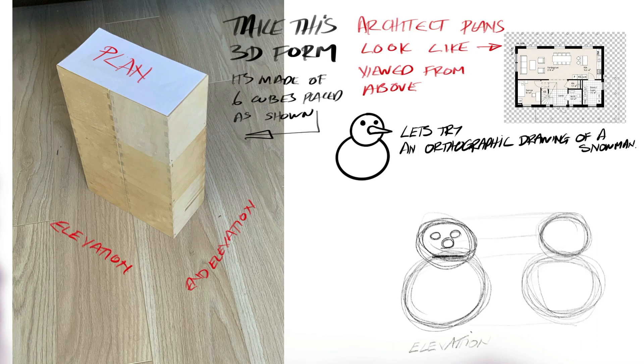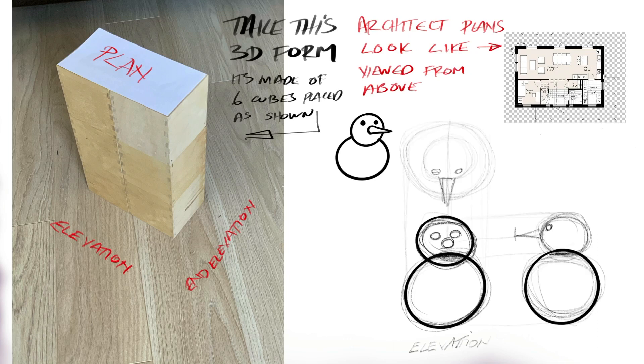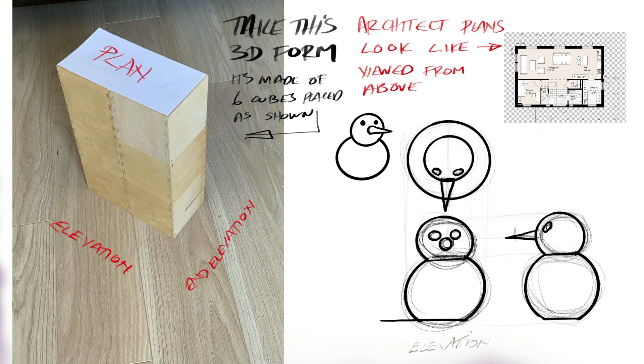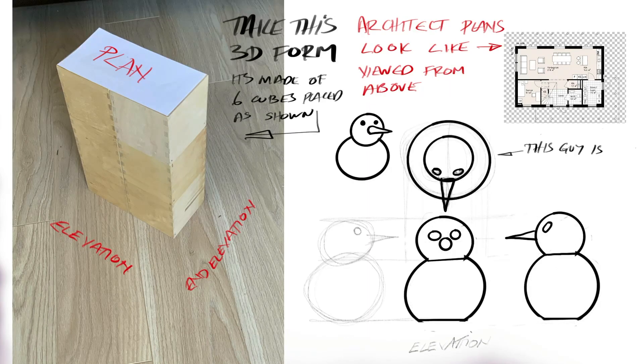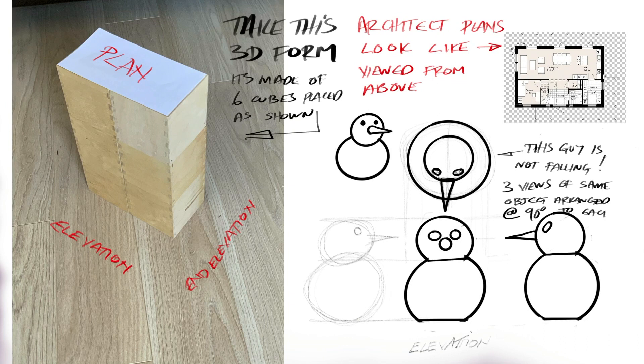Let's have a look at this idea of a snowman—very quickly, different type of form. So we've got a front view in elevation, a side view, and a top view: elevation, end elevation, and plan. I know that guy is not falling on top of the guy in the middle.